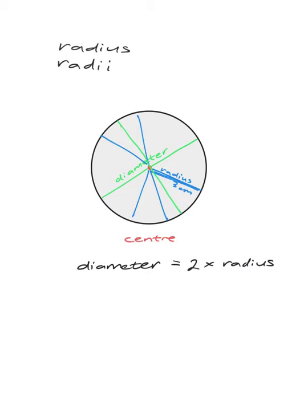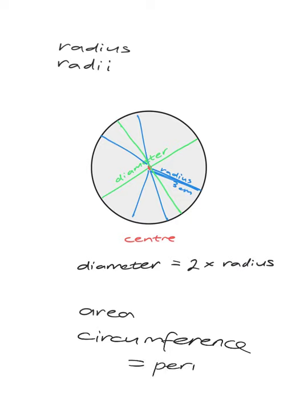There are two other words we want to make sure we know. The first is area, and that's no different to normal — area is just the space that the circle occupies. And then there's the word circumference, which is a new word in the context of circles. Circumference is just a special word for the perimeter. In circles, instead of saying perimeter, we talk about the circumference — if we were a little ant and we walked all the way around the circle, how far would we walk? That is our circumference.